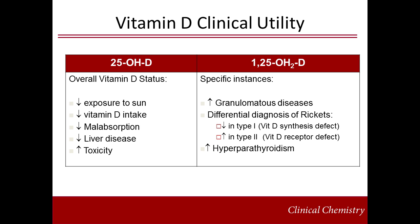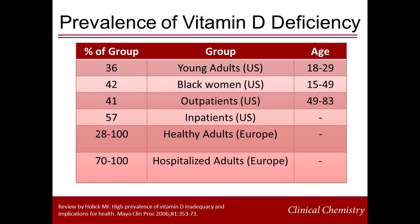1,25-hydroxyvitamin D does have some specific clinical utility. It is useful for detecting granulomatous diseases such as sarcoidosis, differentiation of different types of rickets, and for some types of hyperparathyroidism. There are many hundreds of studies which have assessed vitamin D deficiency in various populations, disease categories, and ethnicities around the world. While some define deficiency as less than 25 ng/mL or less than 50 nmol/L, these definitions differ between studies as do methods of measurement, making comparisons challenging.